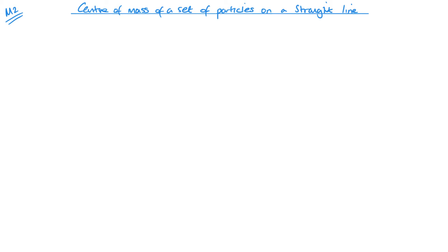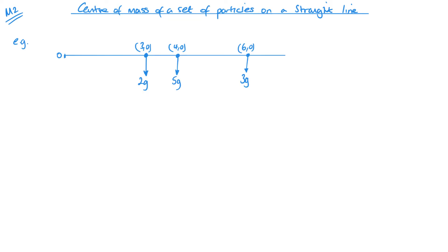To be able to do this, we need to be thinking about our moments. We'll consider our moments and that will enable us to find the center of mass. So imagine I've got three masses: 2 kilograms, 5 kilograms, and 3 kilograms, placed along a straight line. So this would be the origin — these are along the x-axis essentially.